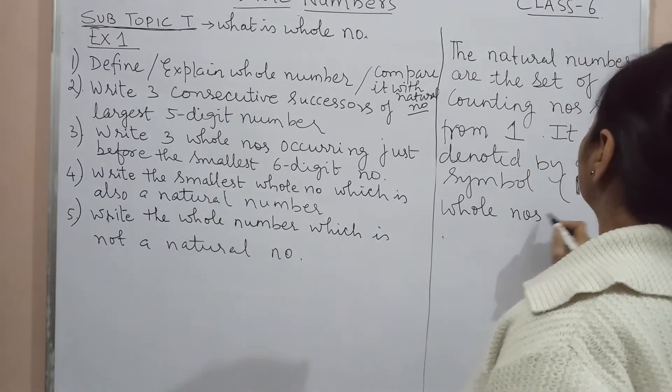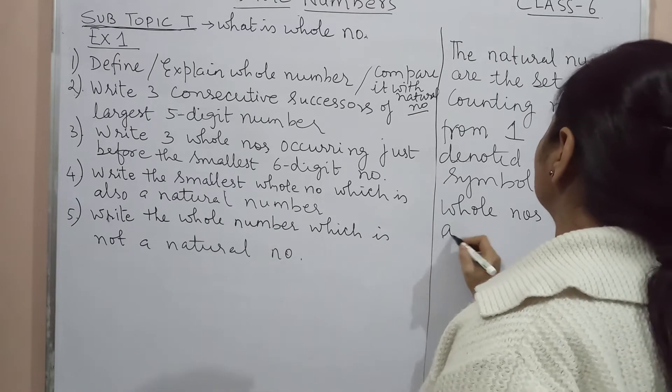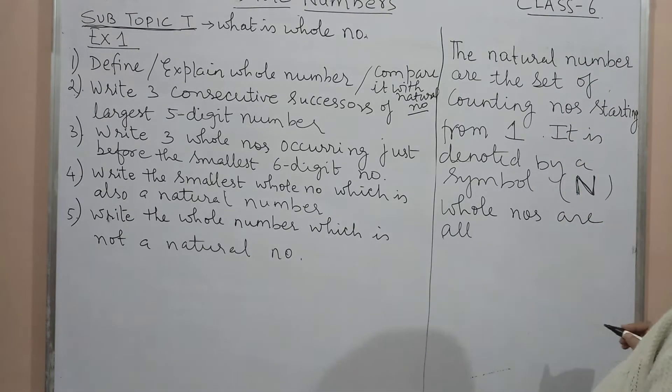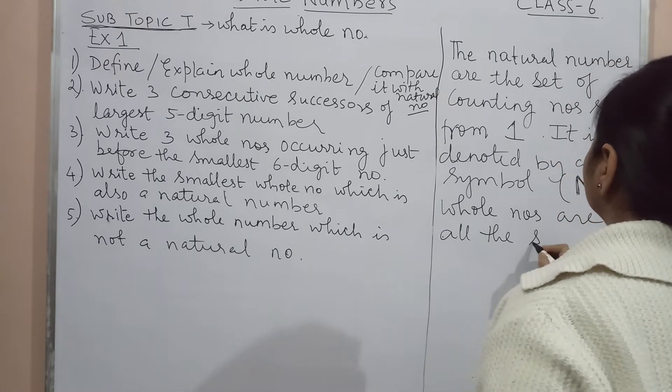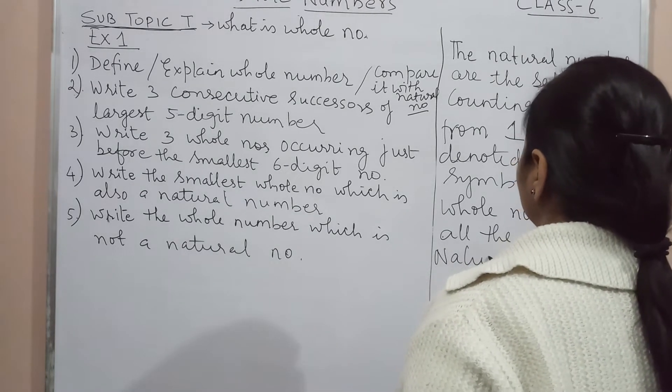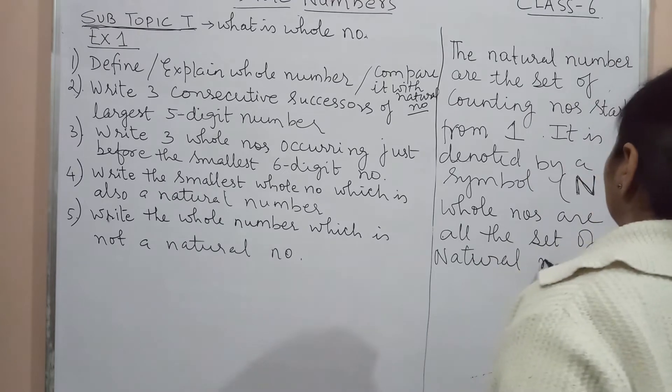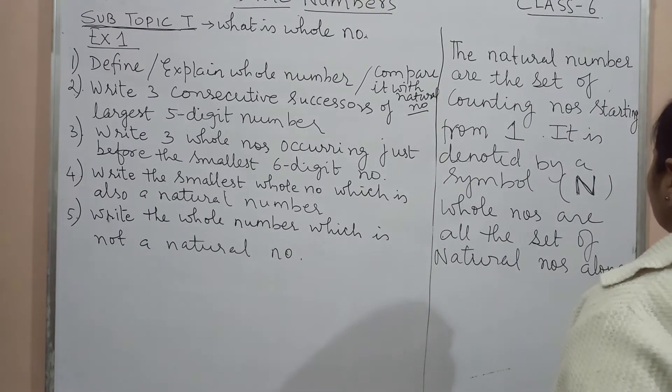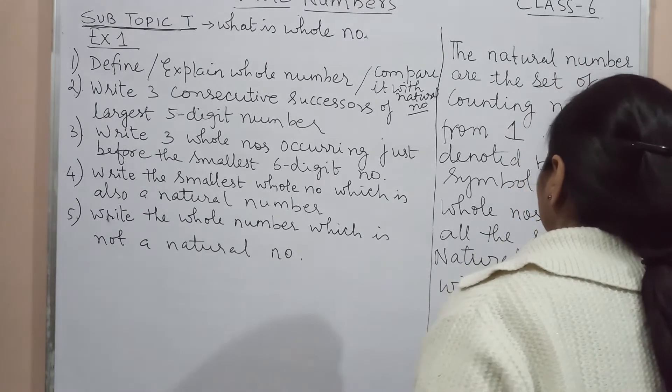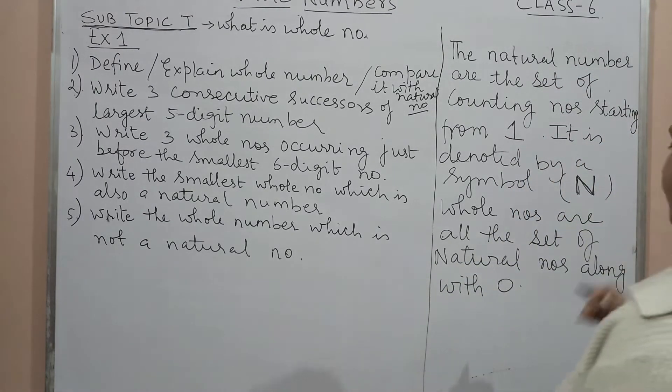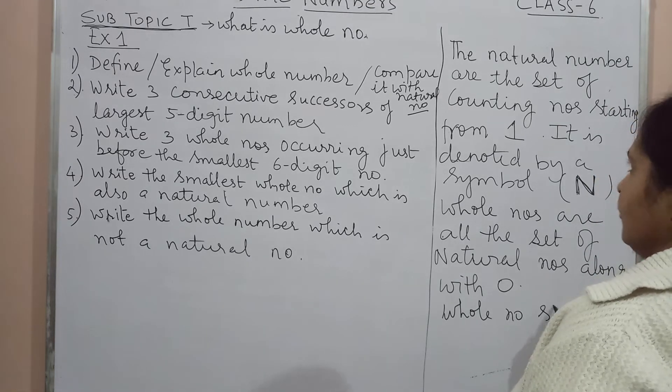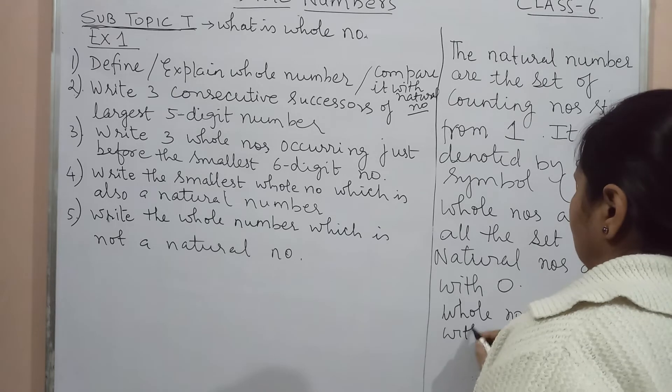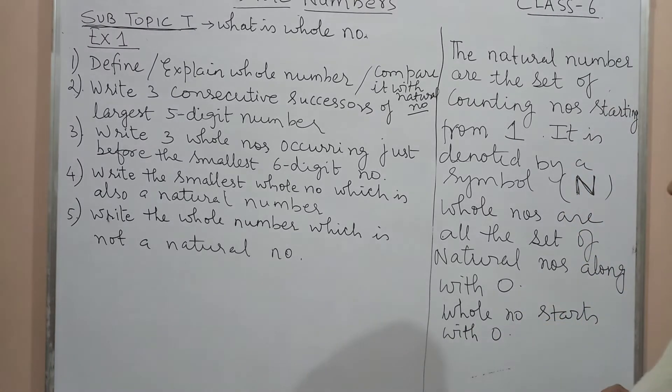Whole numbers are all the natural numbers along with zero. All the set of natural numbers along with zero. So whole numbers start with zero. So you can note down this.